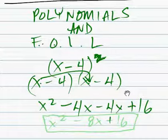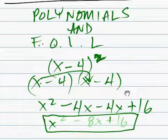Simplify: X squared minus 8X plus 16. That is the answer.